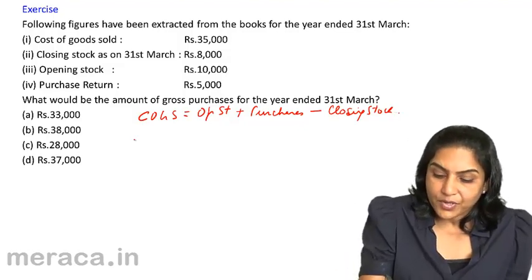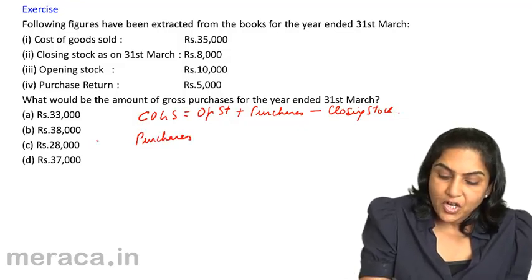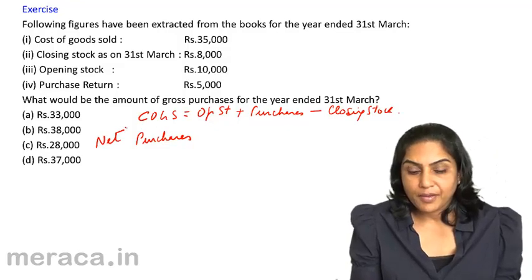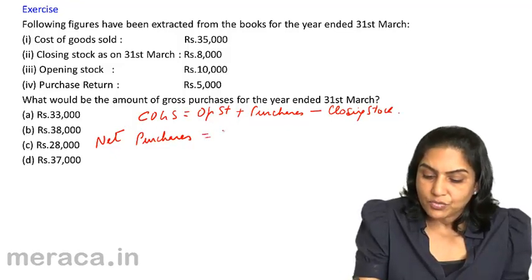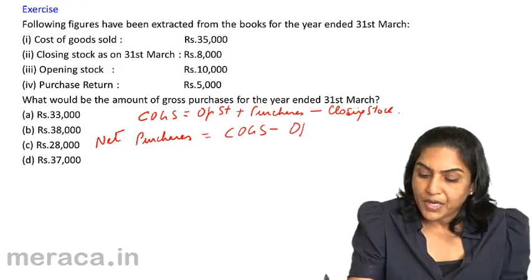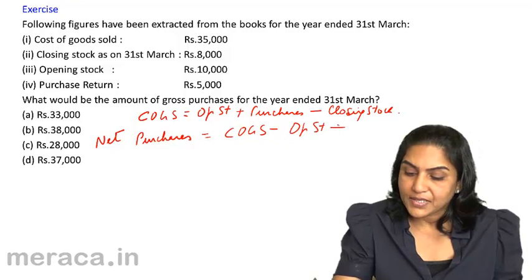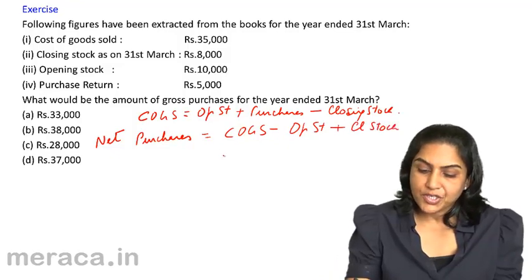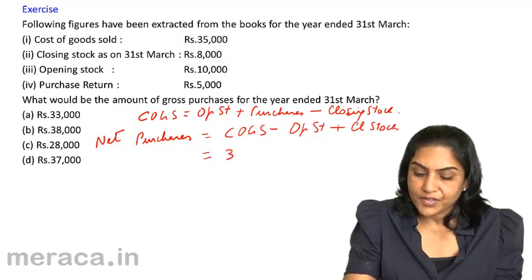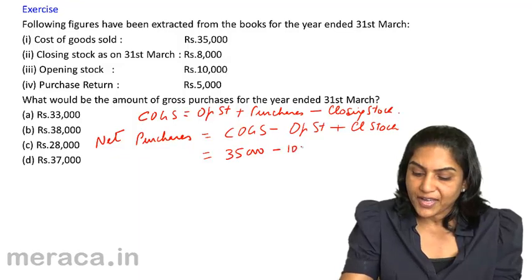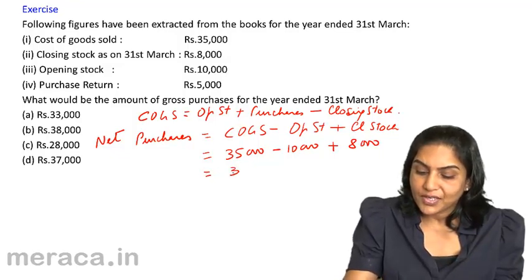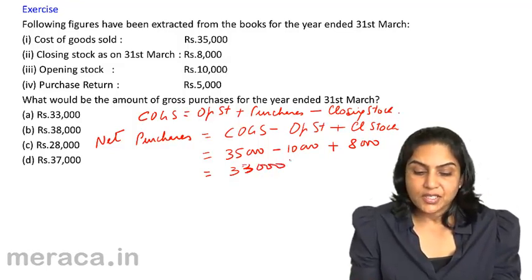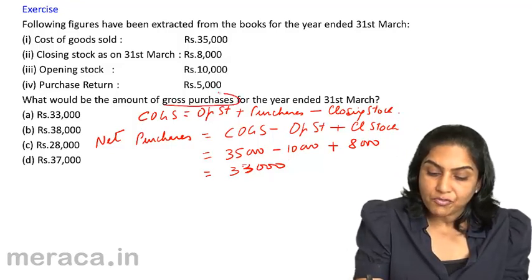Rewriting the equation, net purchases — that is, purchases less purchase returns — equals cost of goods sold minus opening stock plus closing stock. So, net purchases equals 35,000 minus 10,000 plus 8,000, which equals 33,000. Net purchases is 33,000. But the question asks for gross purchases.